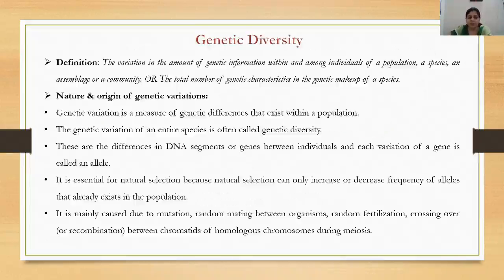What is genetic diversity? It is the variation in the amount of genetic information within and among individuals of a population, a species, an assemblage, or a community. In other words, the total number of genetic characteristics in the genetic makeup of a species is known as genetic diversity.